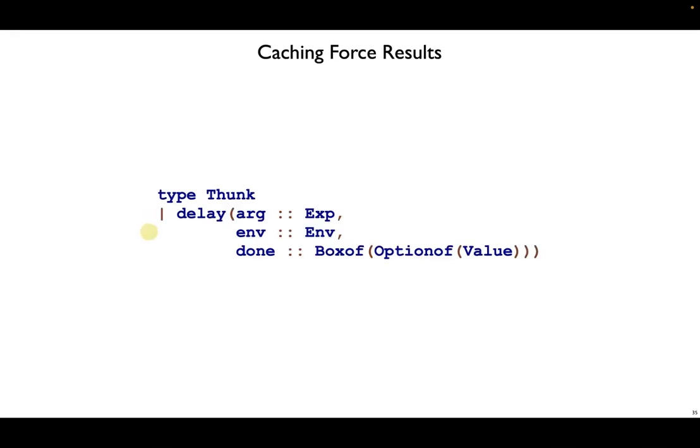Delay takes an argument expression, an environment, and then a done field, which is a mutable box. And inside it's got an optional value. So this option will start off as none. And after we interpret the argument for the first time, we fill in this box with some value.